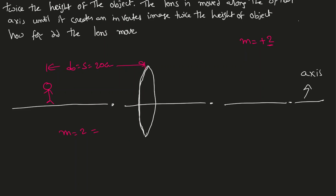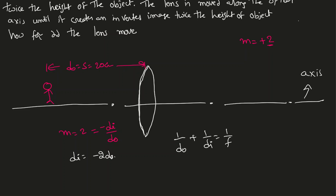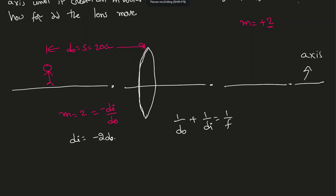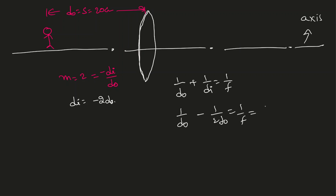For the first case: m = +2 (upright image), so +2 = -d-i / d-naught, meaning d-i = -2 × d-naught. Substituting into the lens formula: 1/d-naught + 1/(-2 × d-naught) = 1/f, which gives 2/(2 × d-naught) - 1/(2 × d-naught) = 1/(2 × d-naught) = 1/f. Therefore f = 2 × d-naught = 2 × 20 = 40 centimeters.